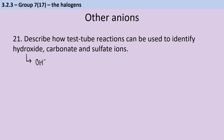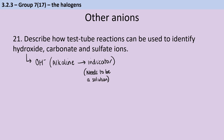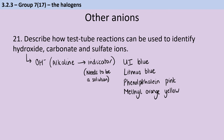Hydroxide ions are found in alkalis, so we test for their presence using indicators — though you'll probably need them in solution, so you may need to add a little water if given a solid compound. Examples include universal indicator or litmus turning blue, phenolphthalein turning pink, or methyl orange turning yellow. For carbonate ions, we add an acid, choosing an appropriate one — for example, you couldn't add hydrochloric acid if you're also doing a halide test. When you add the acid, you'll see effervescence, or bubbling.